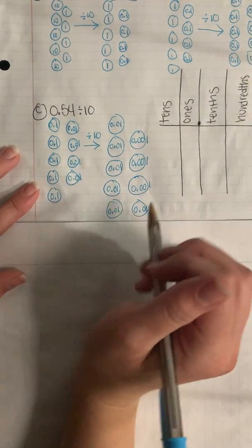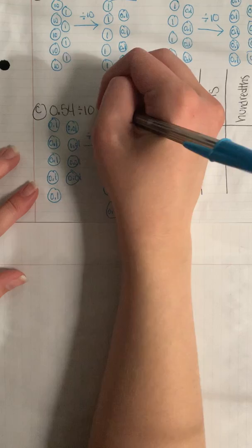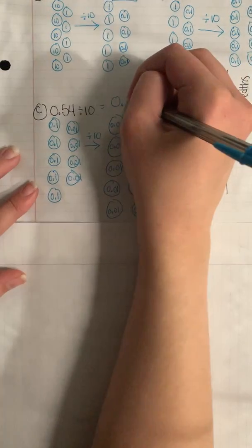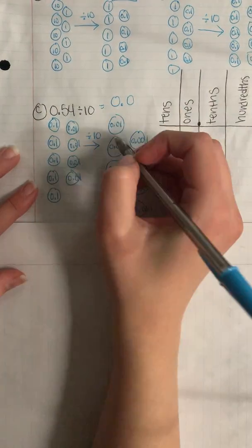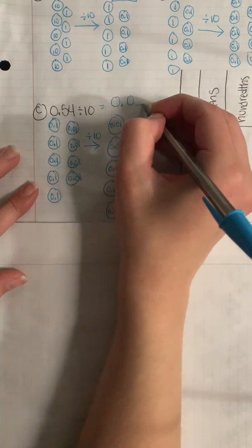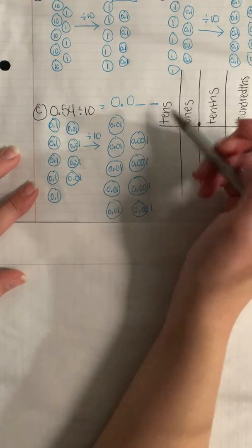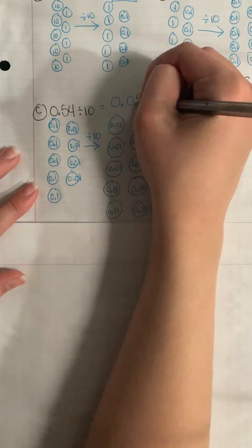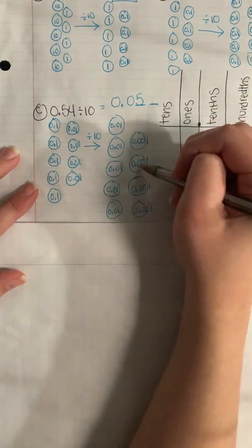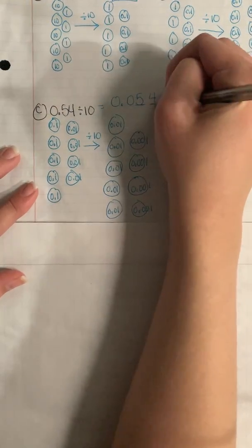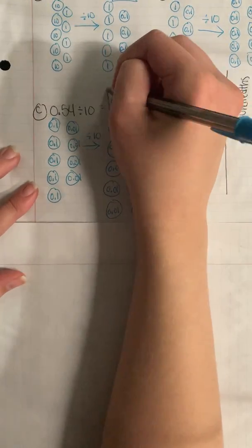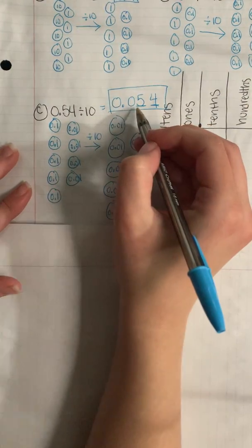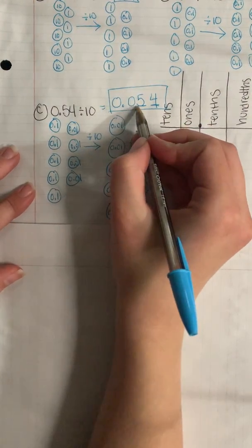That means when I'm counting out my answer, I'm going to have zero in the whole number place, zero in the tenths place, but I will have numbers in the hundredths and thousandths. So I have 1, 2, 3, 4, 5 hundredths and 1, 2, 3, 4 thousandths. So my quotient is 54 thousandths.